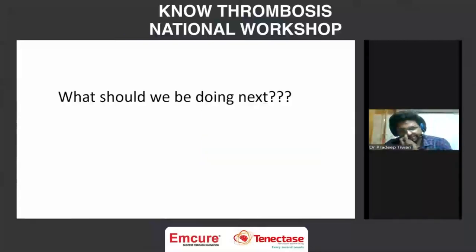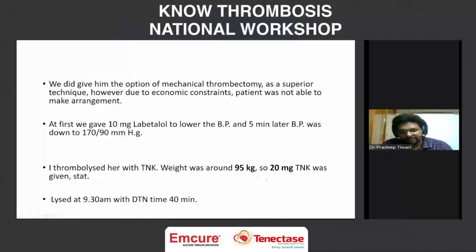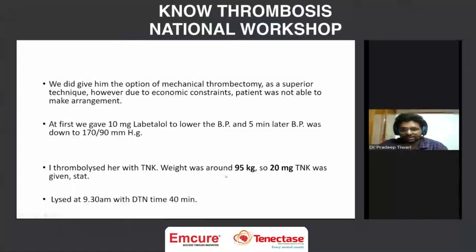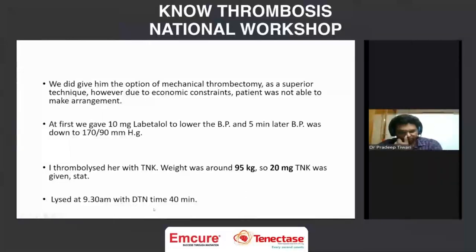Because of economic constraints, we offered mechanical thrombectomy but she couldn't afford it. So we had to thrombolyze her. We first gave 10 mg labetalol, reducing BP to around 170/90. We thrombolyzed her with tenecteplase 20 mg. The practical difficulty was the NIHSS exceeding 25 and her weight of 95 kg, meaning the 0.25 mg/kg dose would exceed 20 mg. With no fixed guideline, I preferred giving 20 mg. She was lysed around 9:30 a.m., with door-to-needle time of approximately 40 minutes.